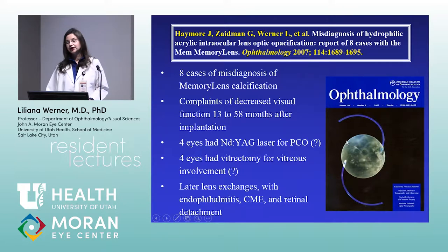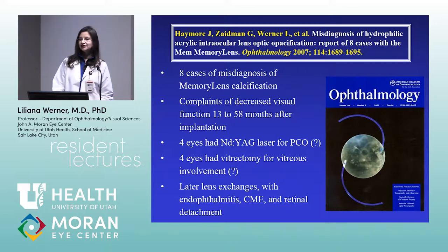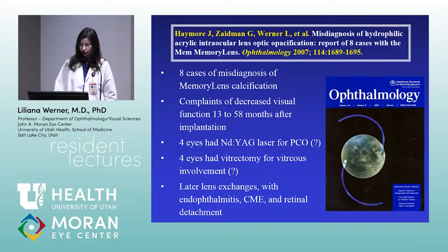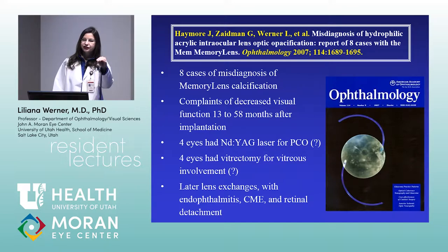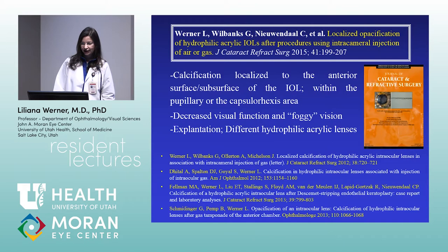The only treatment for lens calcification is explantation — there is no other option. A careful slit lamp examination is sufficient to make the diagnosis. You do not need any additional testing. A good slit lamp exam can even show you where deposits are located: on the anterior surface, within the substance, on the posterior surface, or on both — so pay attention to that.